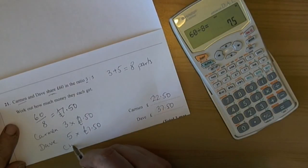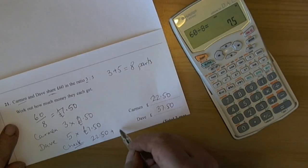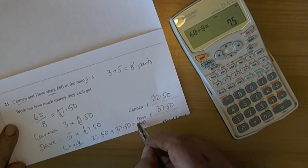The check, really important you do check. If these two numbers are correct, then when you add them up, they should give you the 60 pounds, which they do. So you can be fairly confident that these two answers will be correct.